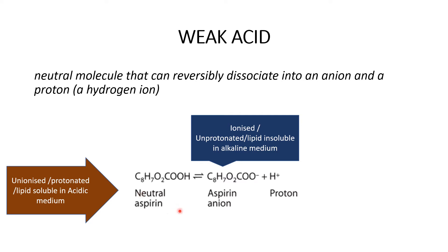So what happens in acidic medium? In acidic medium there will be a lot of protons — many hydrogen ions — available. In that situation, a weak acid will be in the unionized or protonated form. We know that unionized substances are lipid soluble, and hence weak acids are more lipid soluble in acidic medium because they occur in the unionized form.